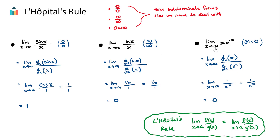Let's try the third one. The limit as x approaches infinity of x multiplied by e to the negative x. This gives us infinity multiplied by e to the power of negative infinity, and e to the power of negative infinity is an incredibly small number — essentially zero. So we get infinity times zero. We didn't have much luck with our three examples, and this is why L'Hopital's rule is very helpful and important.